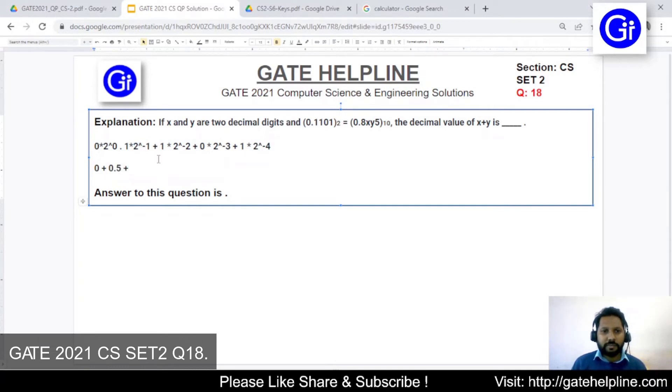We will just keep it here, 0.5. Next number is 1 multiplied by 2 raised to power minus 2. So 2 raised to power minus 2 is 1 upon 4, and 1 upon 4 equals 0.25. So we will write 0.25 here.